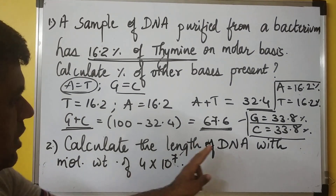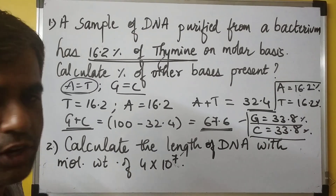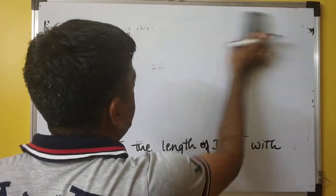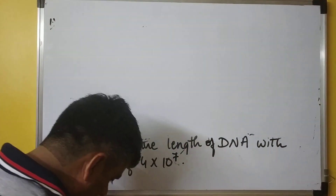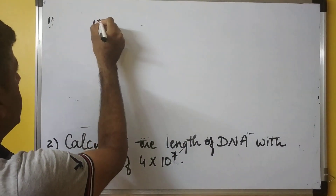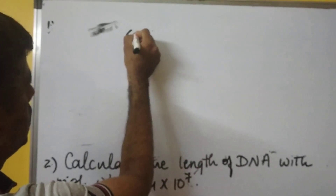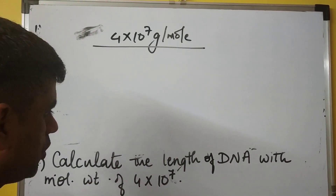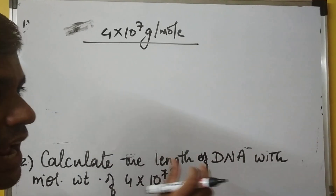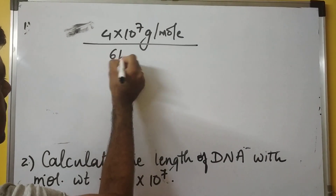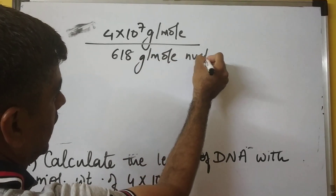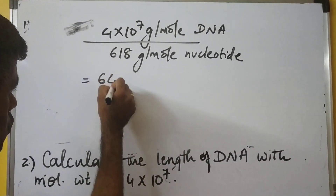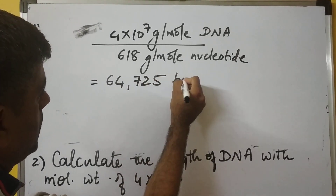The next question says: calculate the length of the DNA with a molecular weight of 4×10⁷ grams per mole. To work this out, we divide the weight of the DNA (4×10⁷ g/mol) by the average weight of a deoxyribonucleotide pair, which is 618 grams per mole. This works out to approximately 64,725 base pairs.